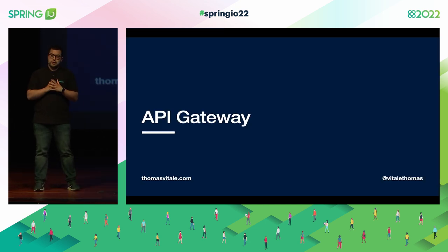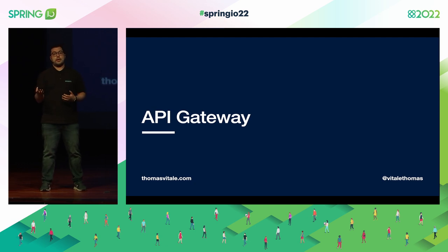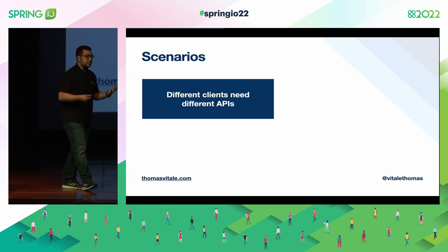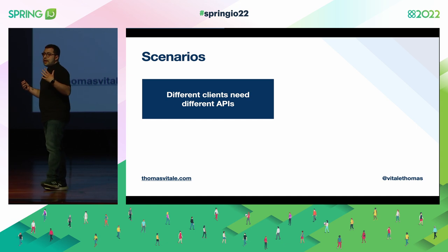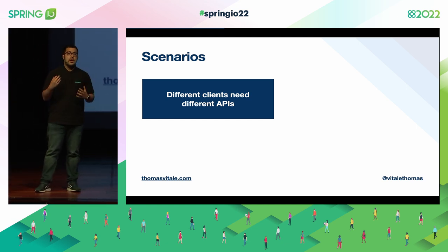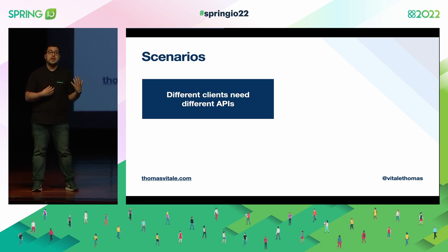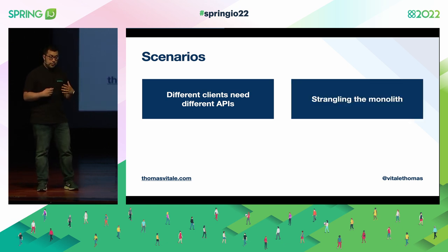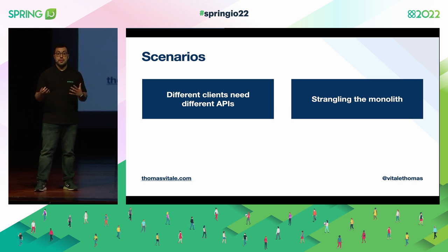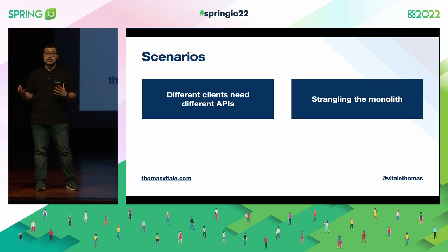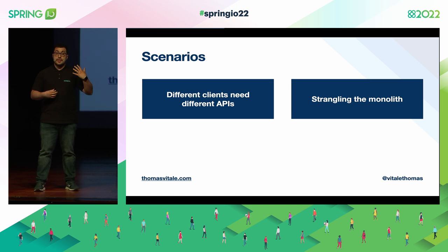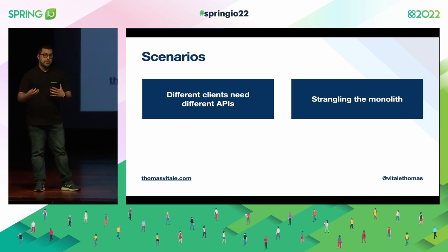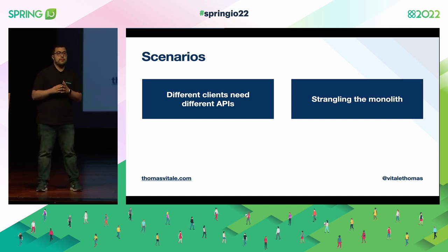Before getting technical, let's talk about the API Gateway pattern and why it's relevant for our distributed system. We can identify a few different scenarios. First, we can have different clients with different APIs in our system, so having a gateway at the entry point gives us a lot of flexibility to provide targeted experiences to different clients without affecting the back end. We can also start extracting microservices out of a monolith — clients will have a consistent API while all the refactoring happens behind it.